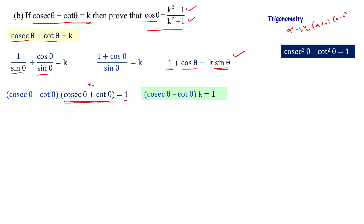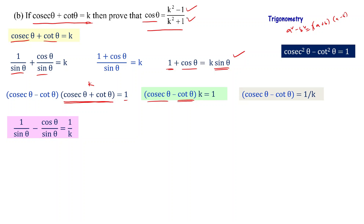Now cosec theta equals 1 by sin theta and cot theta equals cos theta by sin theta. Substituting: 1 by sin theta minus cos theta by sin theta equals 1 by k. The denominator is sin theta on the left-hand side, so this simplifies to 1 minus cos theta divided by sin theta equals 1 by k.